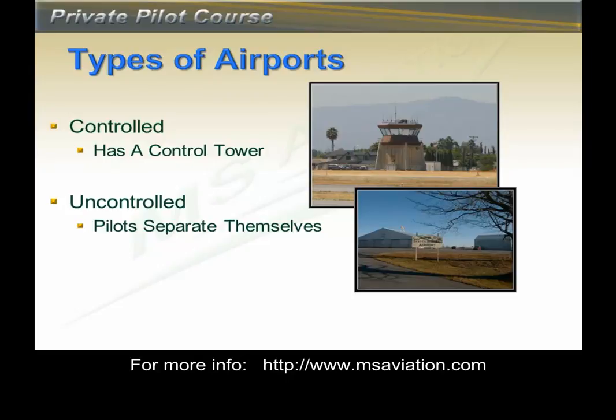Uncontrolled airports are airports that are available for you to use but do not have a control tower. These airports don't require you to communicate with anyone or get any clearances. There are set procedures for going to uncontrolled airports and those will be covered in the traffic pattern section later in this lesson. Uncontrolled airports don't even require you to have a radio, and most of the airports in the USA are uncontrolled airports.